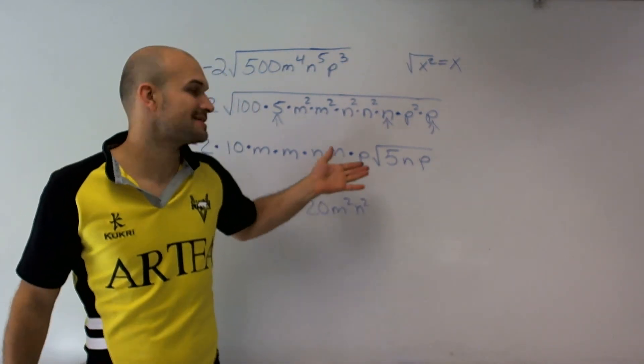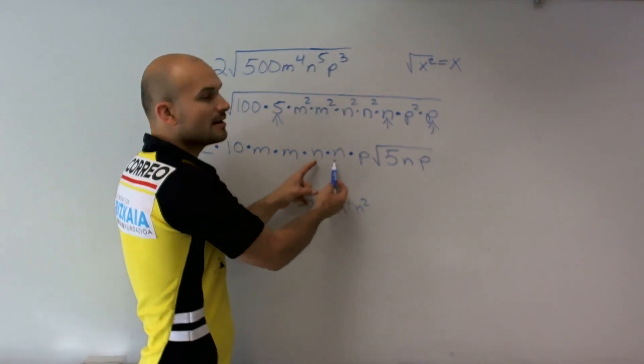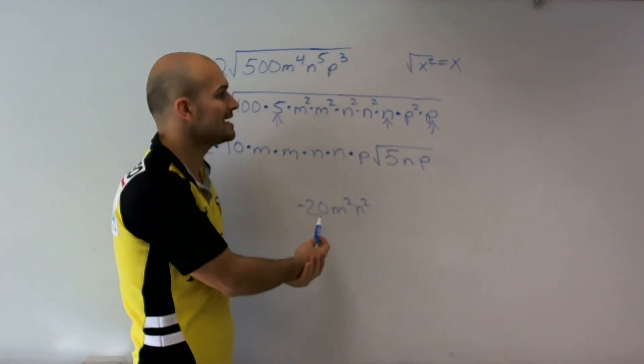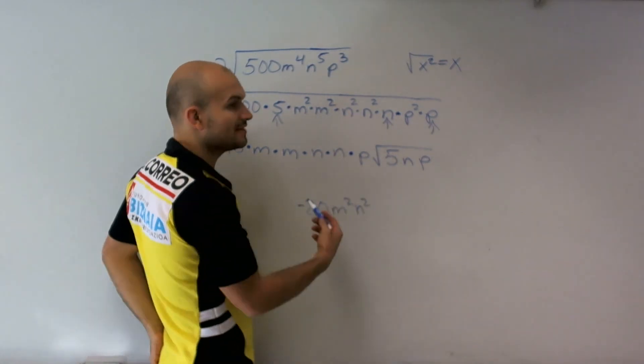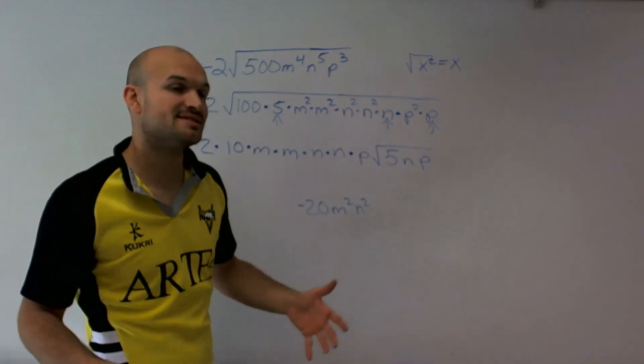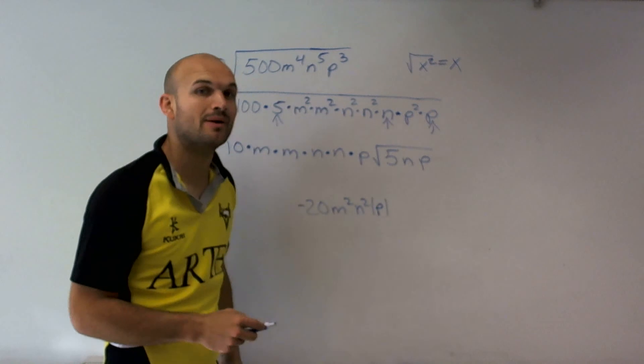And then just because I have this p all by itself, here I know that these numbers are automatically always going to be positive. But here, I don't know that this is going to be a positive number because I'm just taking the square root.